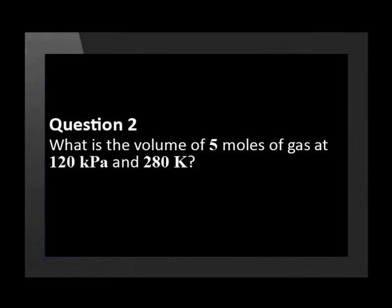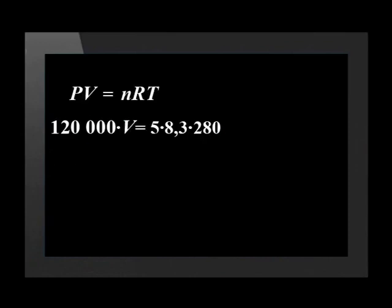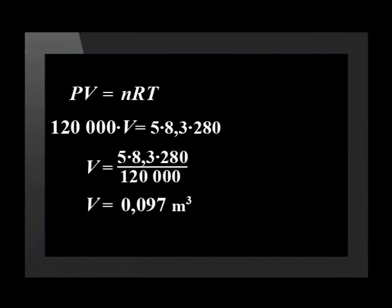Remember that when we answered this question in the other lesson, we did not convert to SI units. Let's answer it again, this time with SI units. Kelvin and mole are already in SI units, but we need to convert the pressure. Kilo means a thousand, so 120 kilopascals equals 120,000 Pascals. We substitute into the equation and solve. The answer is 0.097. This seems different to what we got before — 97 decimeters cubed.